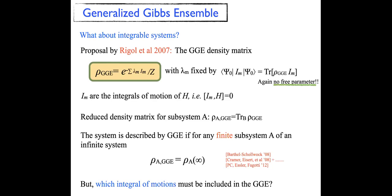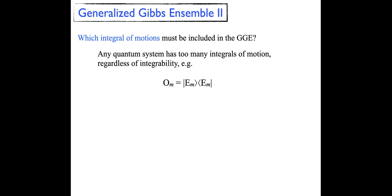So there are some integrals of motion that should be put into the GGE, and some that should not. The physics is clear: in the GGE one should put only what is called local or quasi-local integrals of motion — these are integrals of motion that are sums or integrals of local operators, exactly the same kind of charges that appear in Noether's theorem of quantum field theory. Non-local objects, like the projectors on eigenstates, connect a finite subsystem A with something far away and have no meaning for our local questions.